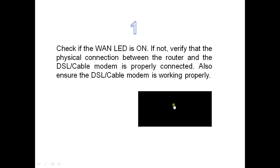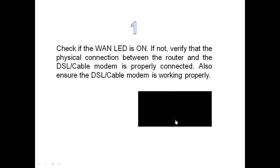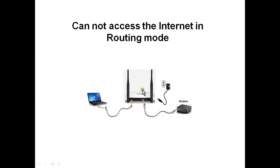After switching on the router, we will check the WAN LED. If it's on, that means it's okay. If it's not on, we will verify the connections between modem and router — disconnect the ethernet cable and reconnect it, or change the cable. First, we will make sure the modem is working properly by connecting the modem directly to the laptop. If you are getting internet, connect it back to the WAN port.